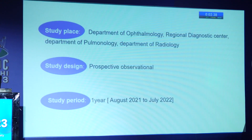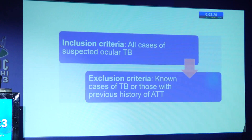The study was conducted in the Department of Ophthalmology, Regional Diagnostics Centre, Department of Pulmonology and Department of Radiology. It is a prospective observational study with a one-year period of study. All cases of suspected ocular TB were included. Known cases of TB and those with previous history of ATT were excluded.